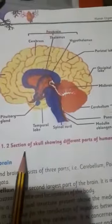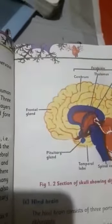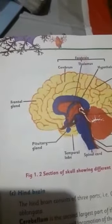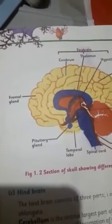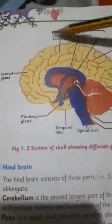The forebrain is the largest part of the brain. You can see the section of the skull showing different parts of the human brain — here we have the forebrain, the midbrain, and the hindbrain.